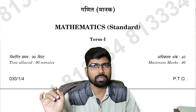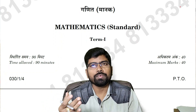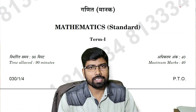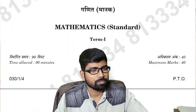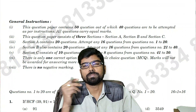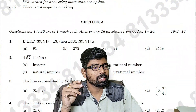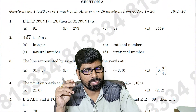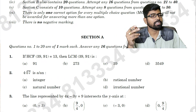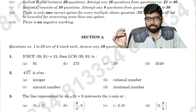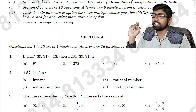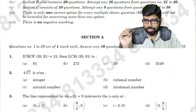I will quickly tell you the options — after that we'll go for the full solution. I'm very happy that all of you have done well in this examination. So let us start one by one. Question number one: if the HCF of 39 and 91 is 13, then the LCM of 39 and 91 is what? Four options are given.